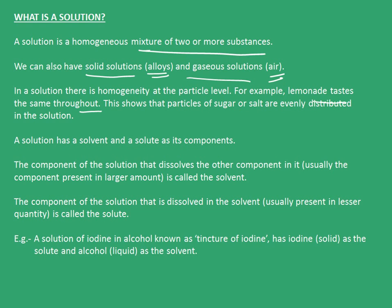This shows that particles of sugar and salt are evenly distributed in the solution. A solution has two components: solvent and solute. The component of a solution that dissolves the other component — usually the one present in higher amount — is called the solvent, which is water in the case of lemonade. The component that is dissolved in the solvent, usually present in lesser quantity, is called the solute, which is sugar in lemonade. Another example is a solution of iodine in alcohol, also known as the tincture of iodine, where iodine is the solute and alcohol is the solvent.